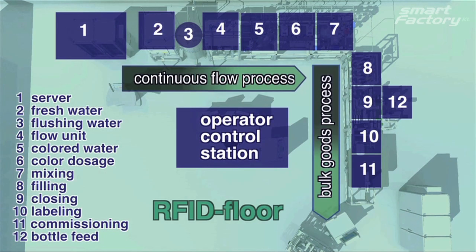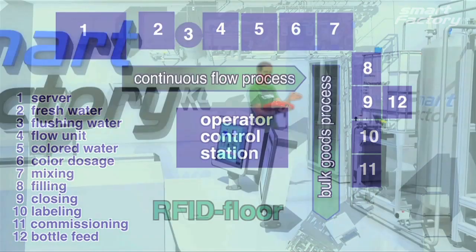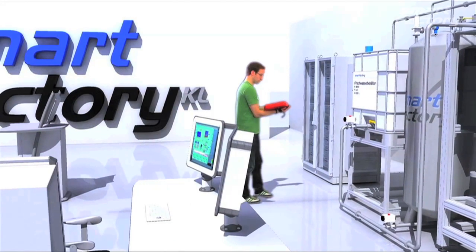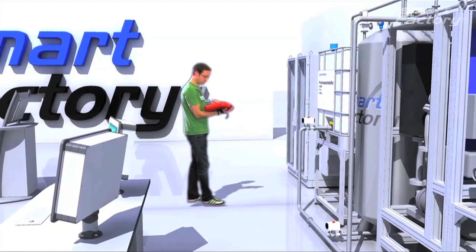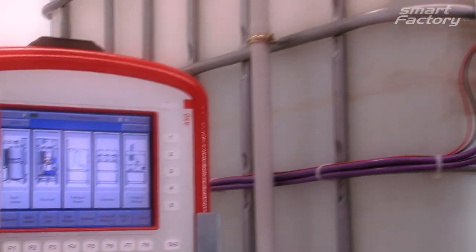The factory, built in 2005 and 2006, is based on a real production setting in a downsized but representative factory environment. Therefore, the equipment is divided into a batch process part and a bottling line.